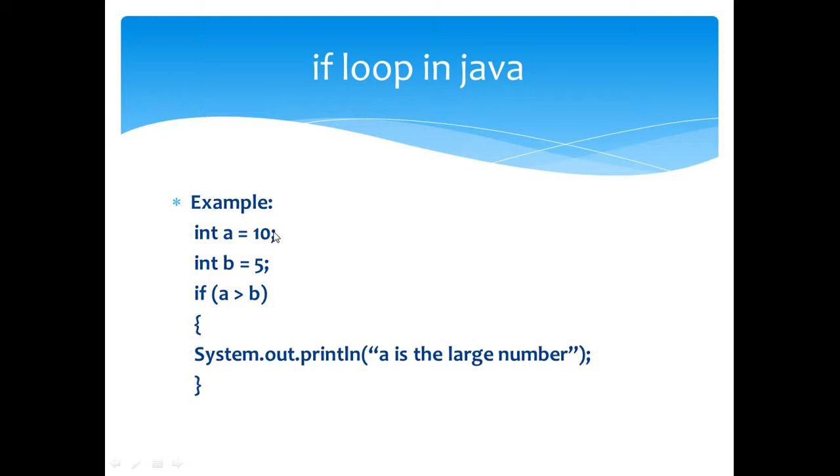Here is a simple example that demonstrates the working of an if loop. Here you can see that there are two variables declared here, a and b. A has a value 10 and b has value 5. And here I check whether the value of a is greater than b.